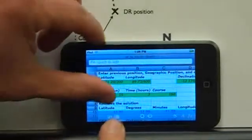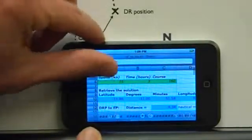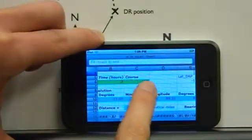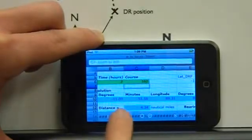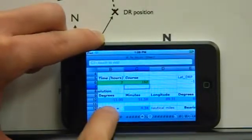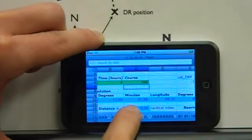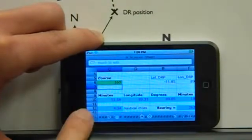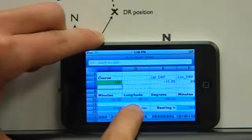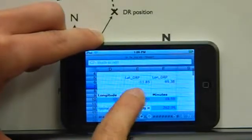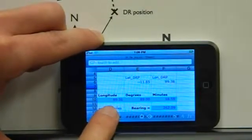So the solution is here in the cyan cells. The latitude is 11 degrees south and 51.6 minutes. The longitude is 89 degrees east and 18.6 minutes.